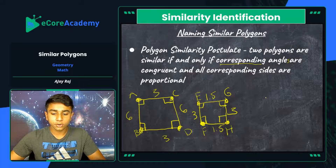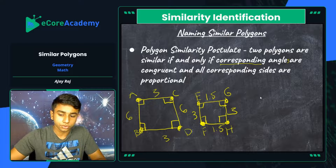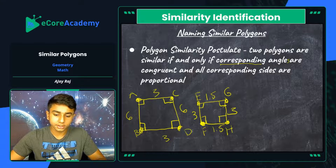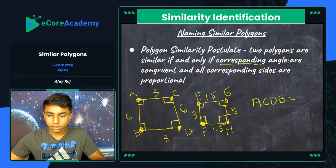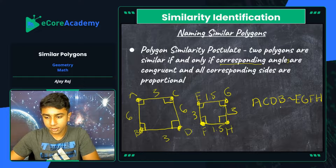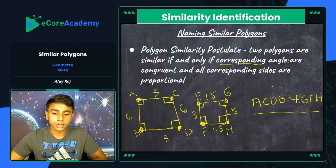Now that we've identified similarity, we need to write it in a form that allows us to recreate the similarity postulate on a new drawing without referring back to the original. We develop a similarity identification statement based on corresponding relative positions. Vertex A corresponds to E, so we can write that ACDB is similar to EGFH. Correspondingly, side AC is similar to EG, side CD is similar to GF, and side AB is similar to EH. With this statement and given ratios, you can develop a similarity diagram entirely from scratch.